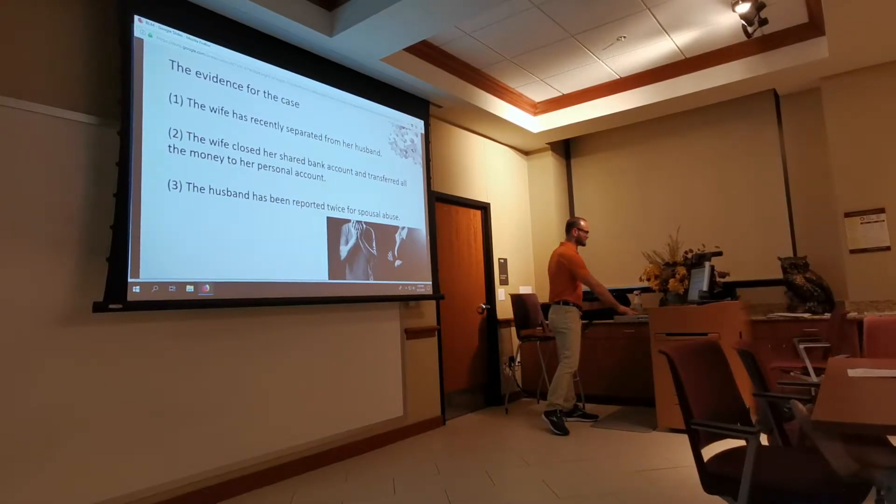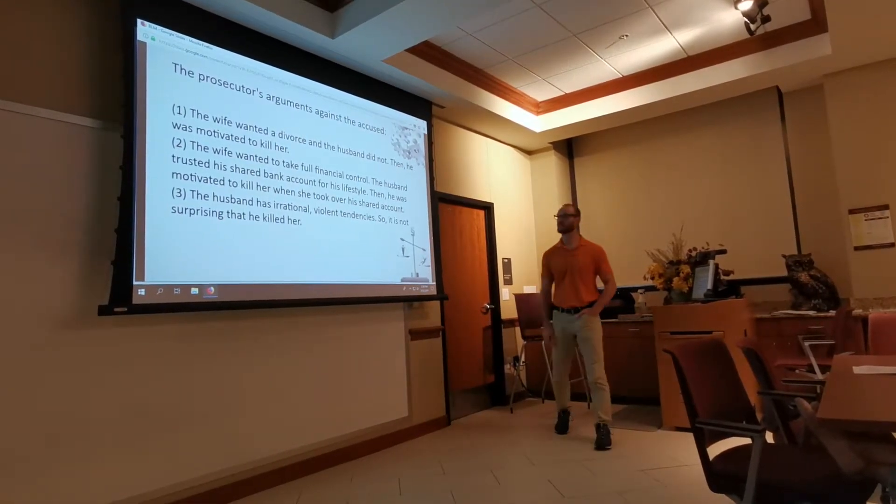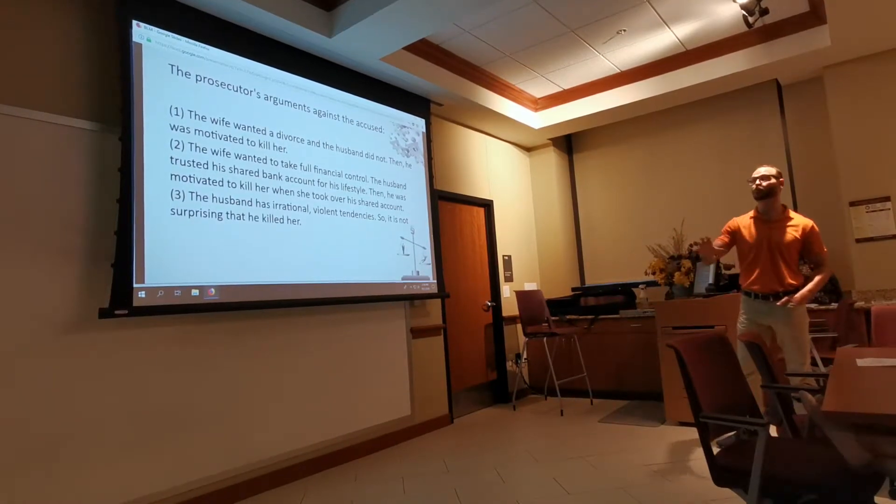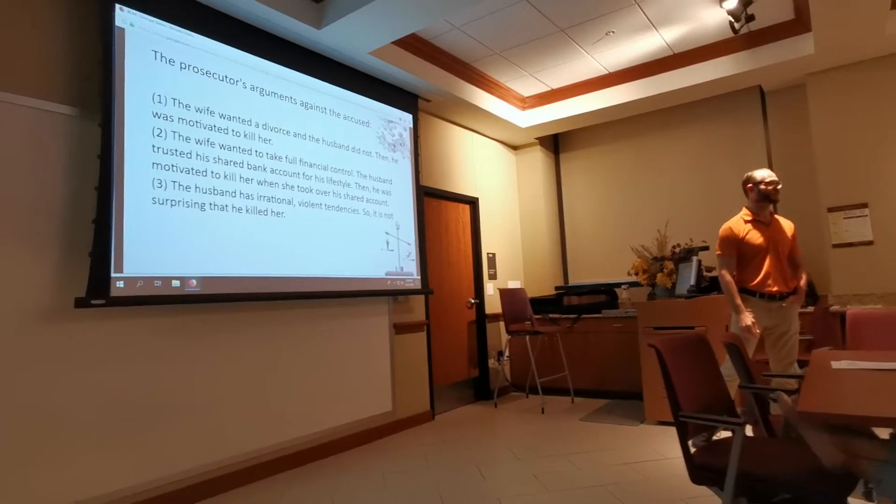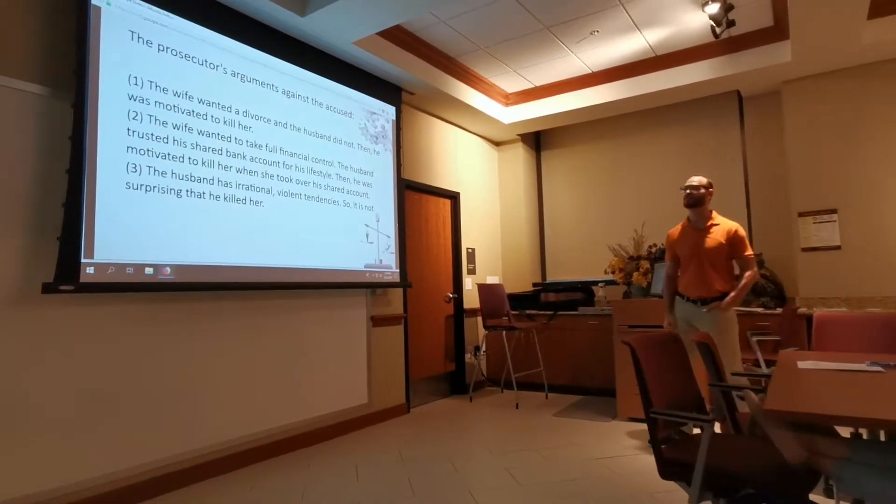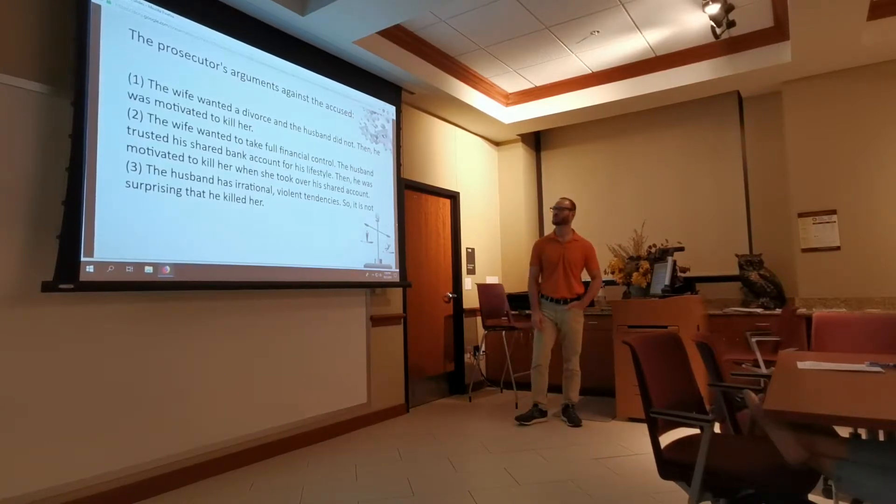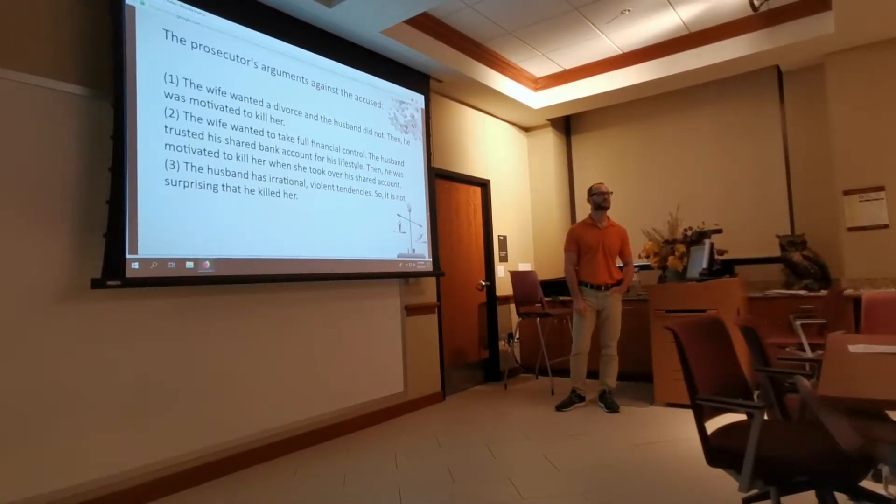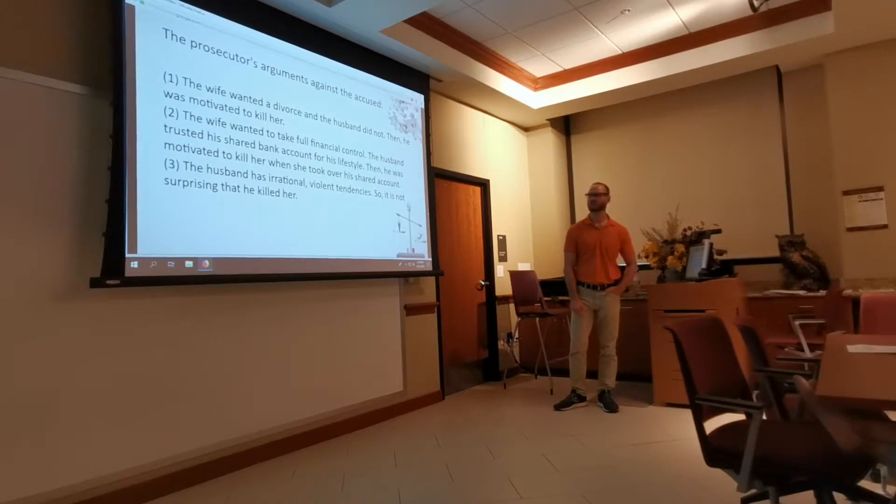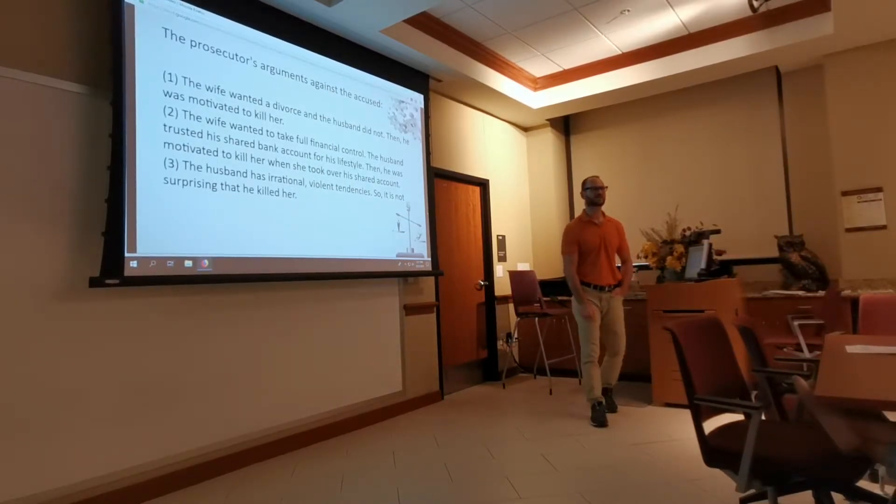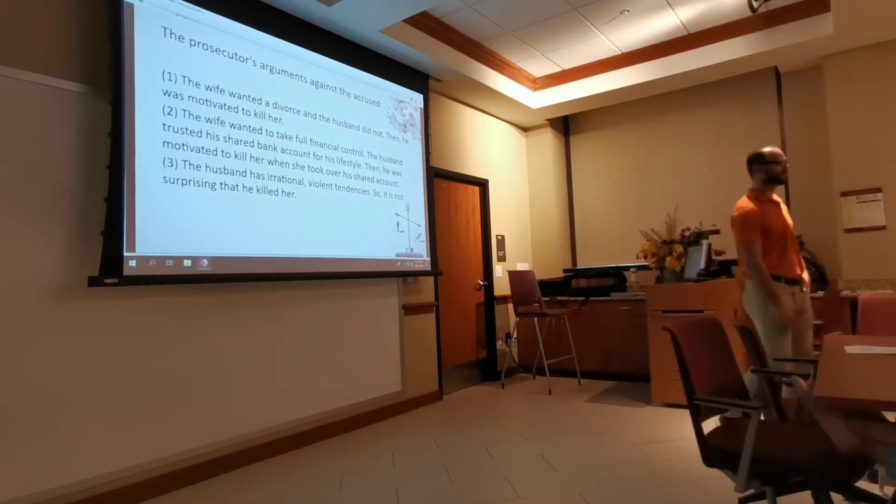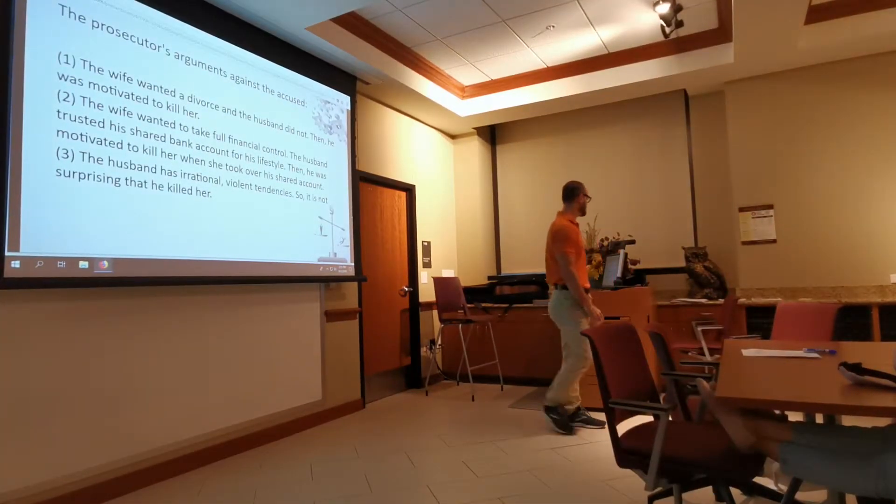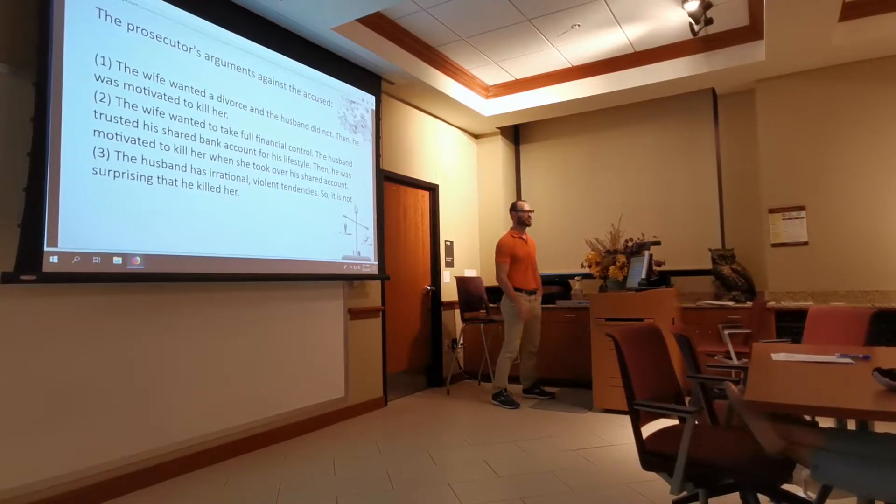So, here's what the prosecution says. So, first, the first piece of evidence, the wife wants a divorce, or she wanted a divorce, and the husband did not. Then, he was motivated to kill her. Second one, the wife wanted to take full financial control. The husband trusted his shared bank account with her, and he was motivated to kill her when she took everything from the bank account. And, lastly, the prosecutor, the lawyer for the state, says the husband was completely irrational. He likes to beat his wife and so forth. And, it's not even surprising that he killed her.